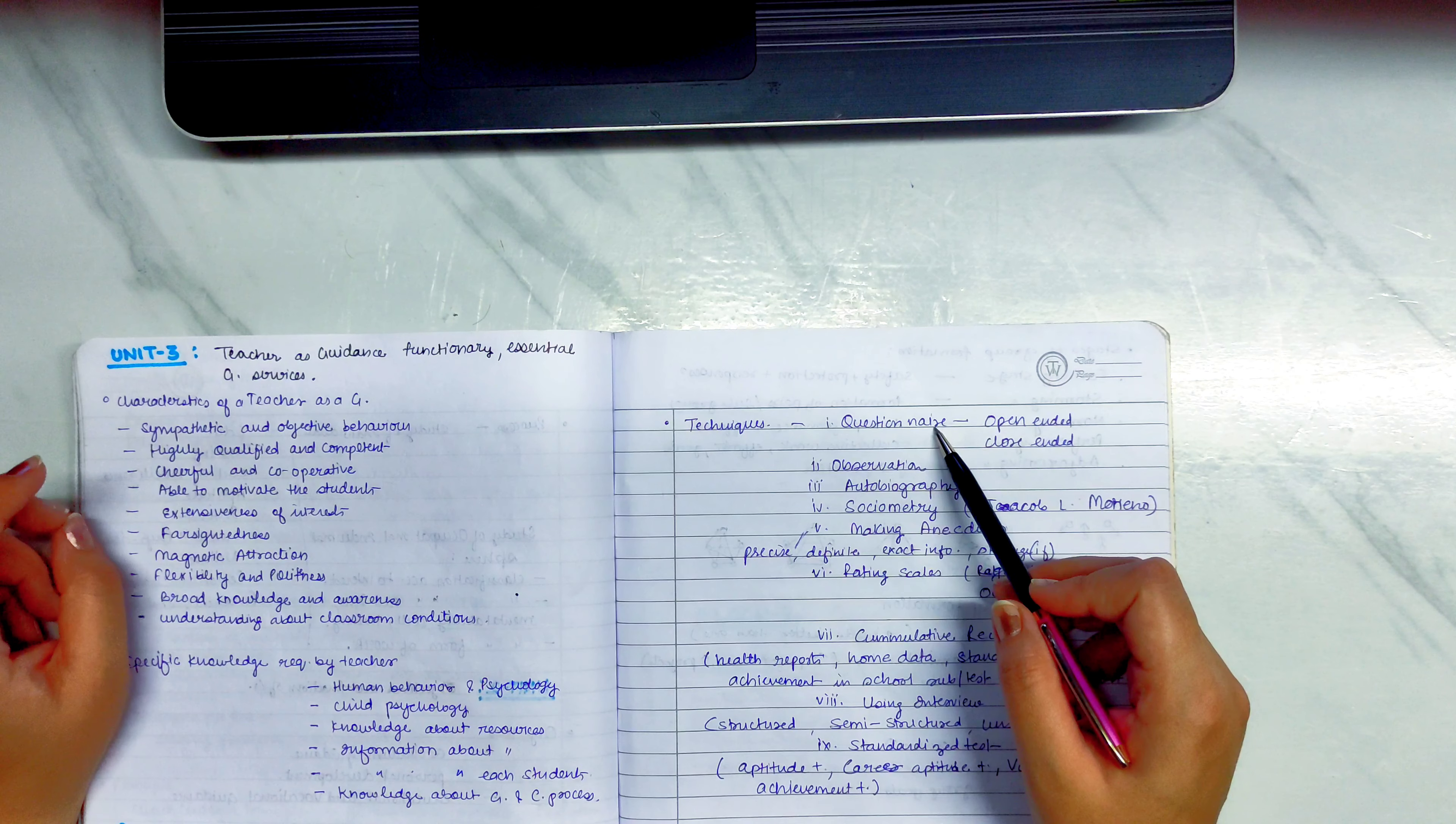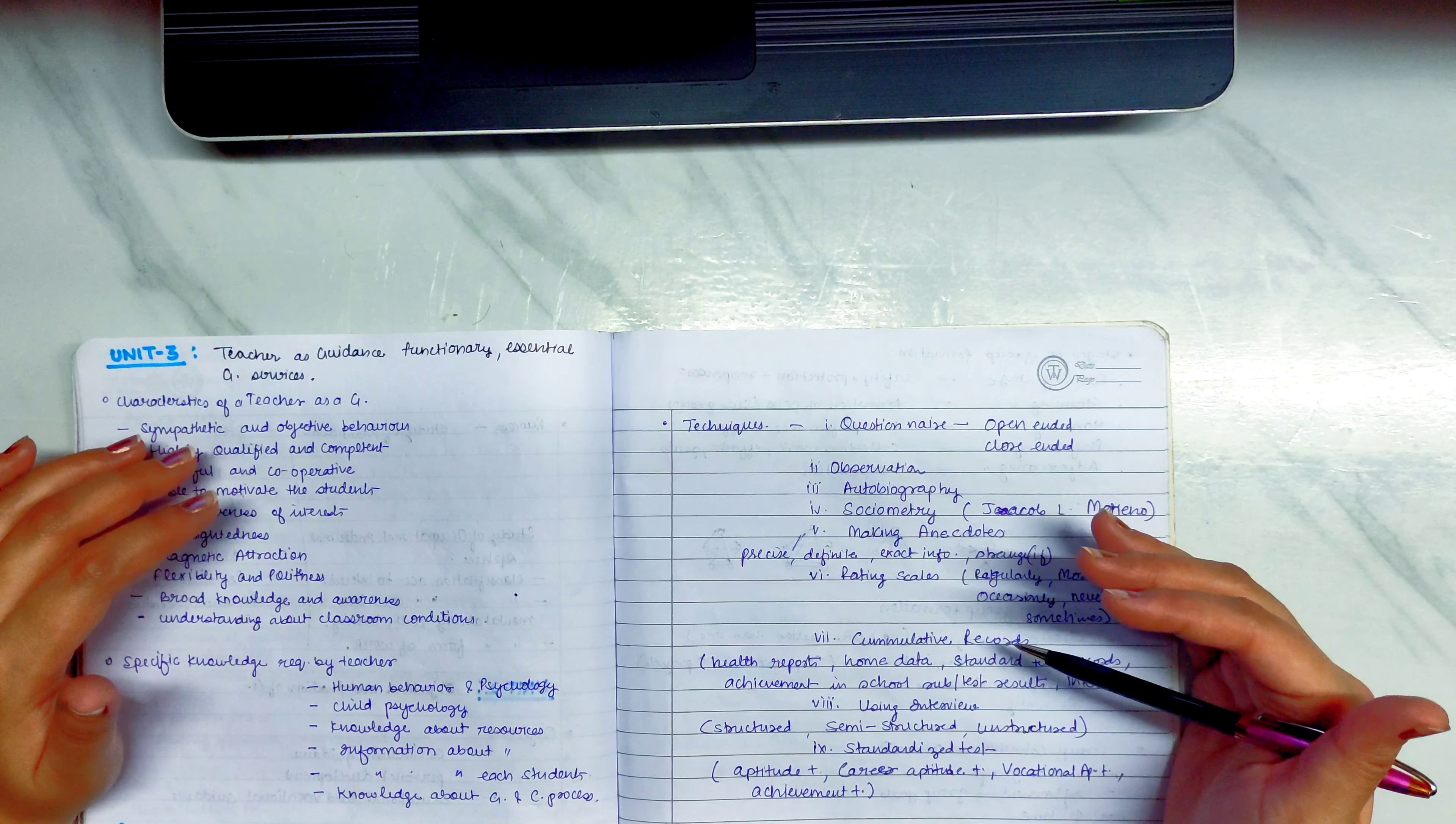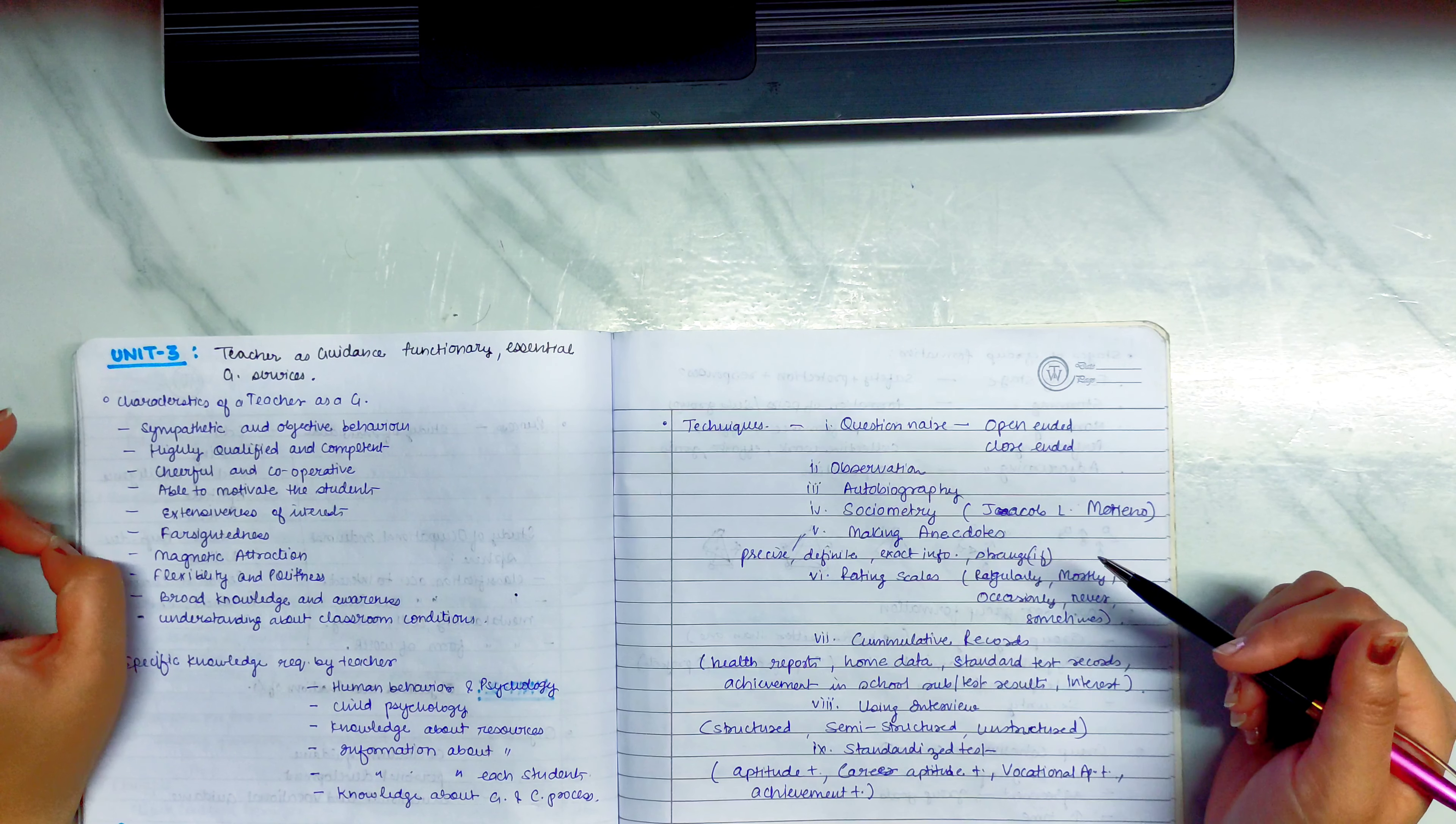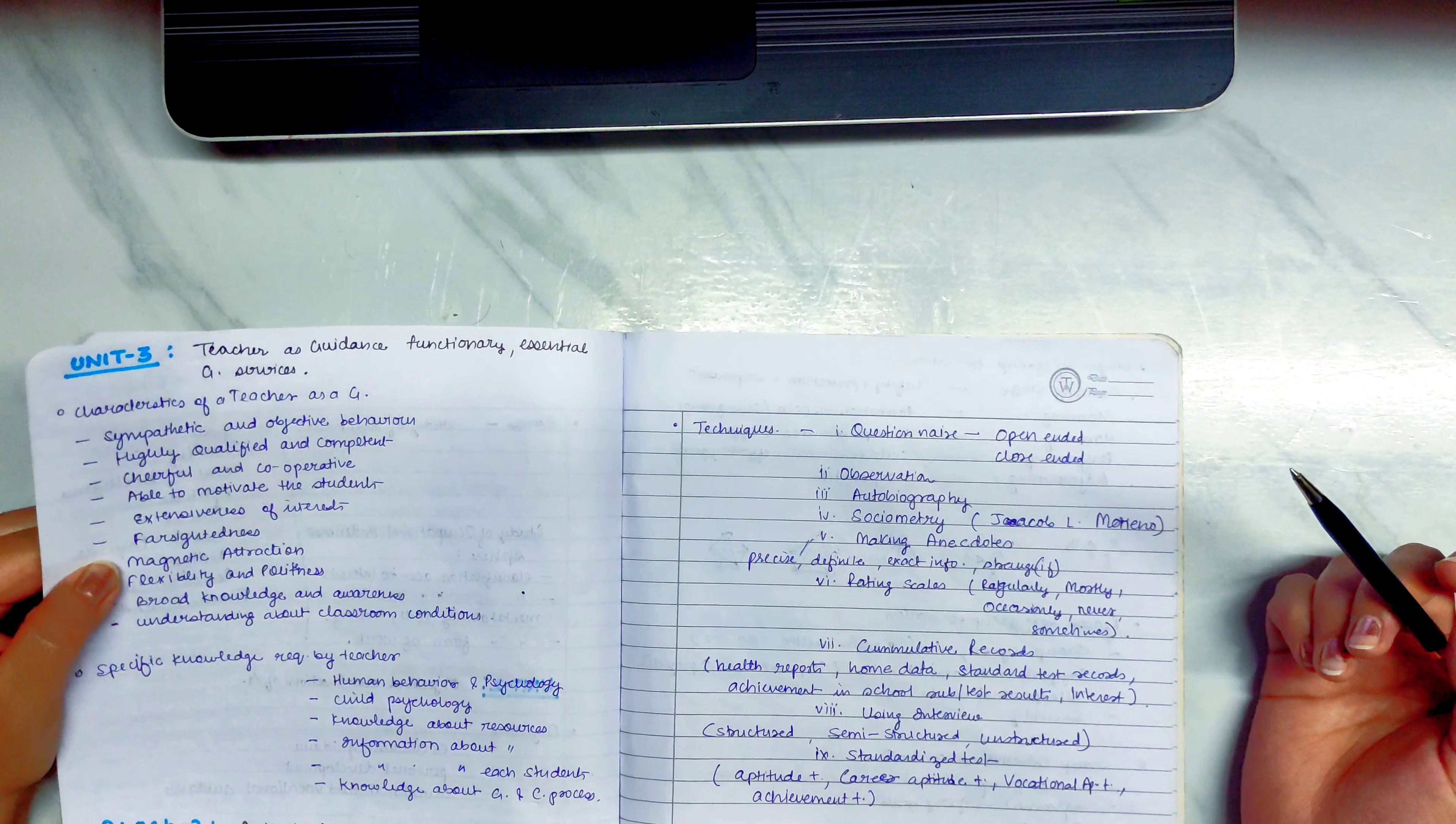First of all, question and method. Question and method is open-ended, close-ended. You can ask any answers. What color do you like? And in open-ended, why, where, when, how it comes.